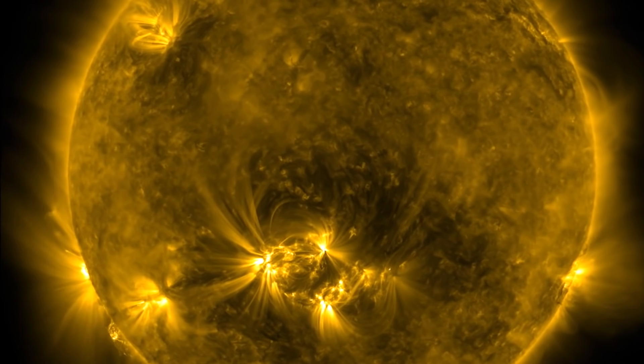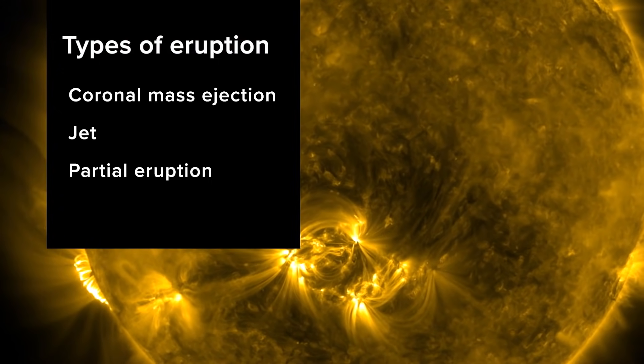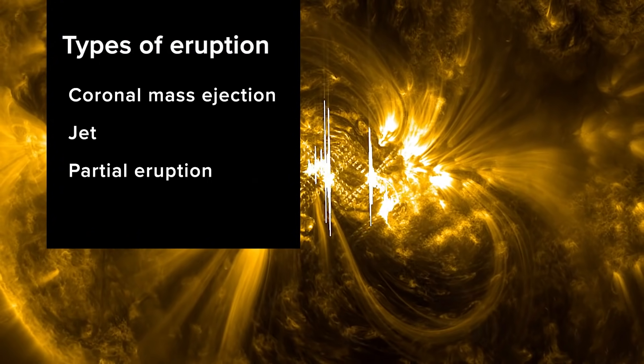Eruptions on the Sun usually come in one of three forms: coronal mass ejections, jets, and partial eruptions.